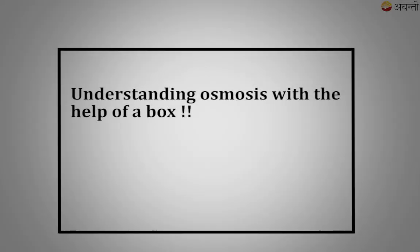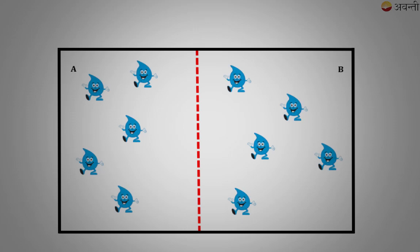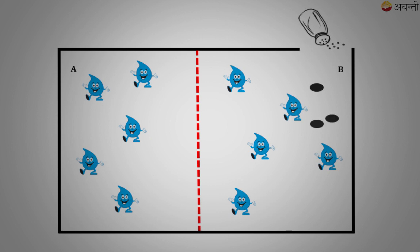Now let's learn the process of osmosis with the help of a box. Imagine a box with one side A and one side B, separated by a semi-permeable membrane. Let's put water in both sides — the water molecules are equal on both sides and the net movement is zero. Now let's put some salt in side B of the box.